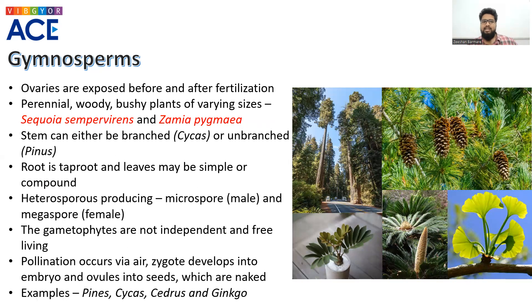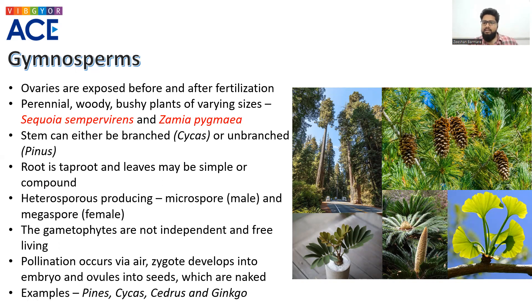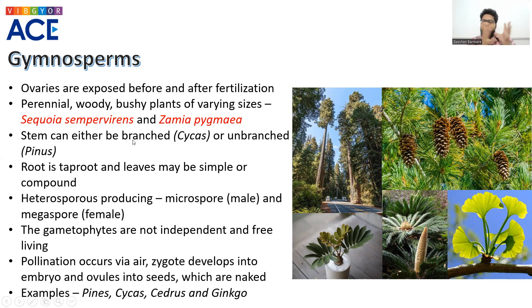We have two examples in NCERT — Sequoia sempervirens and Zamia pygmaea. You can observe this particular plant, the Sequoia species — they are extremely tall, woody, perennial, bushy plants. The next category would be the smallest plant in this classification, that is Zamia pygmaea. The stem of these plants can either be branched, as in the case of cypress plants, or unbranched like pine plants.